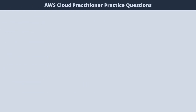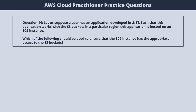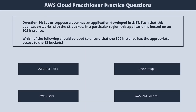Question 14. A user has an application developed in .NET that works with S3 buckets in a particular region, hosted on an EC2 instance. Which of the following should be used to ensure the EC2 instance has the appropriate access to the S3 buckets? 1. AWS IAM Roles. 2. AWS Groups. 3. AWS Users. 4. AWS IAM Policies. The correct answer is 1. AWS Identity and Access Management Roles.